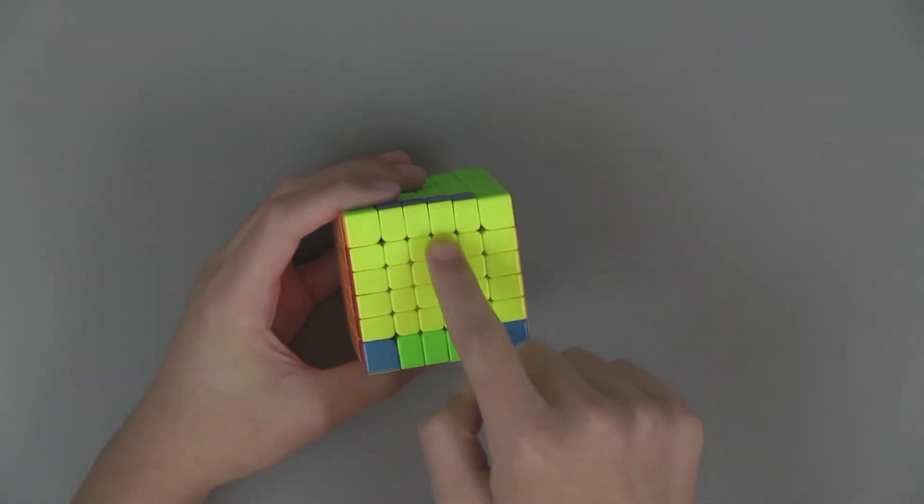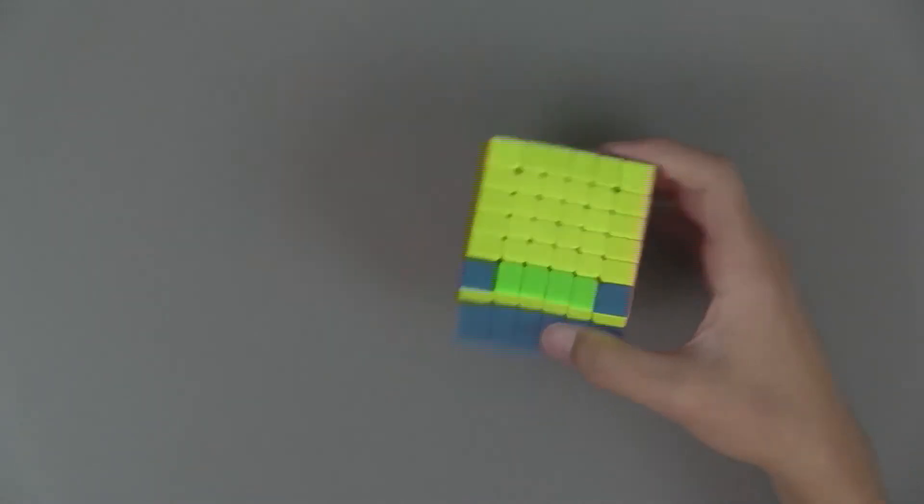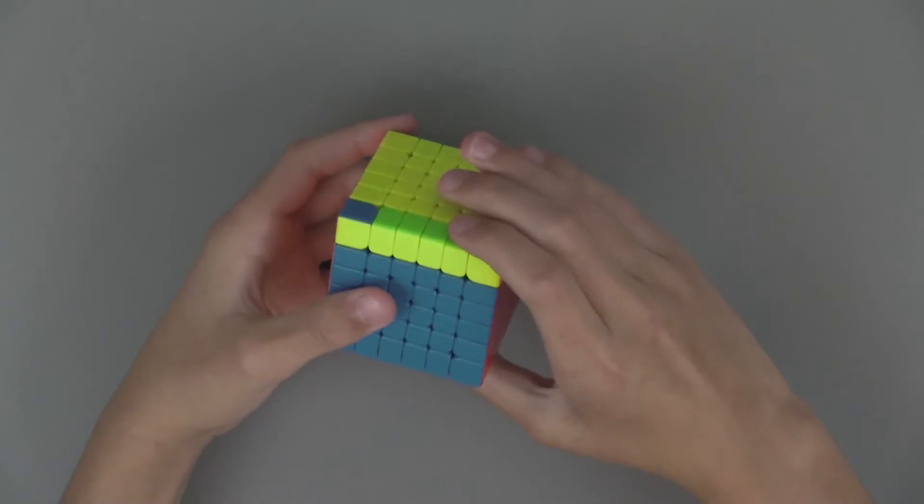So now we have OLL parity. Once again there's an odd number of edges facing up and you do it literally identical to 4x4. You want to cut it in half like this rather than edge parity where you just do these two.